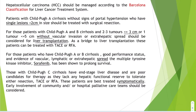Patients with Child-Pugh A or B cirrhosis who have two to three tumors less than three centimeters, or one tumor less than five centimeters, with no vascular invasion or extrahepatic spread, can be considered for liver transplantation. According to the Barcelona classification, liver transplantation is indicated for a single lesion less than five centimeters or two to three tumors less than three centimeters, with no extrahepatic spread. As a bridge to liver transplantation, these patients can be treated with TACE or RFA.